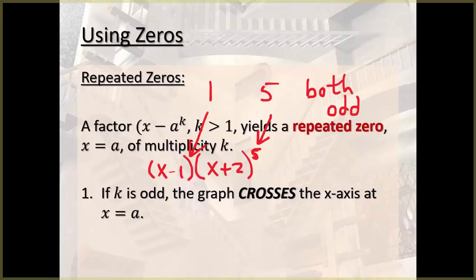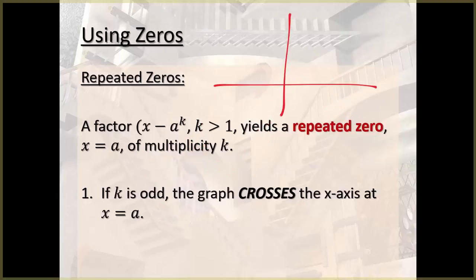That tells us that the graph is going to cross the x-axis at 1 and negative 2. So whatever else happens in this graph, we know that at 1 and at negative 2, the graph is going to be crossing.